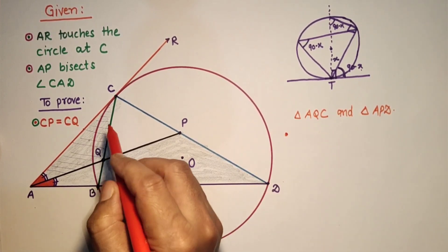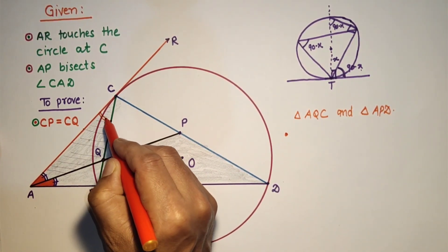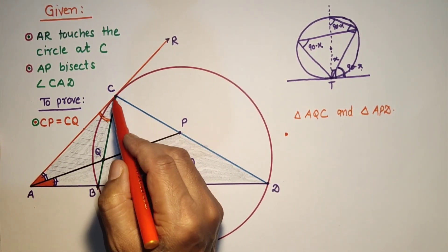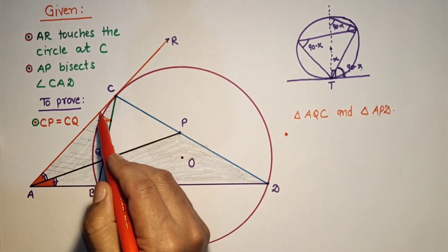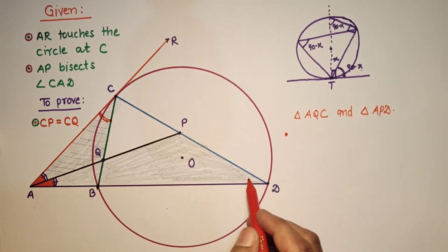As we know that by using tangent chord theorem, this angle, this angle between the tangent and the chord will be equal to the angle subtended by this chord in alternate segment.